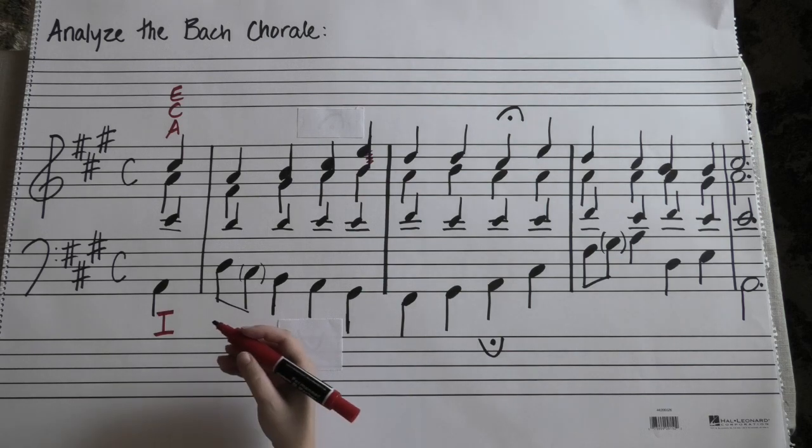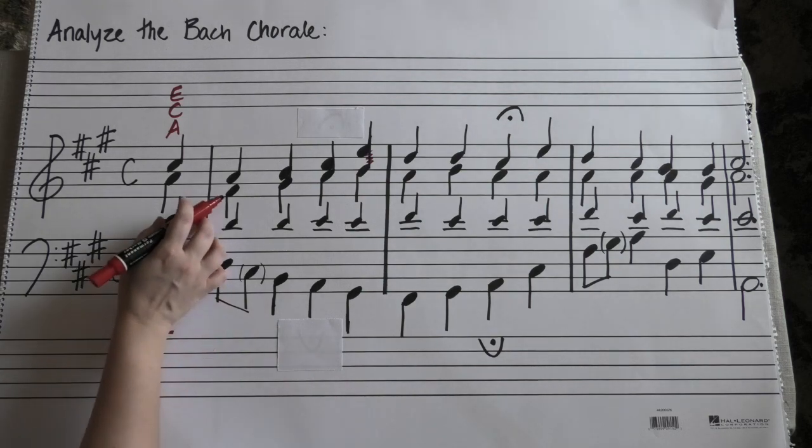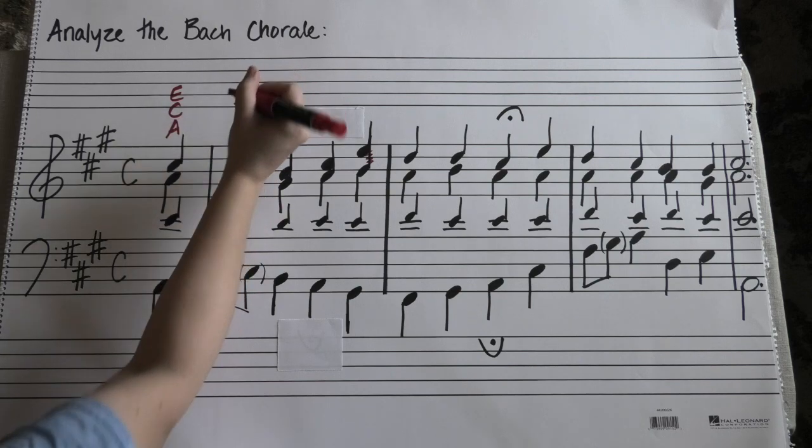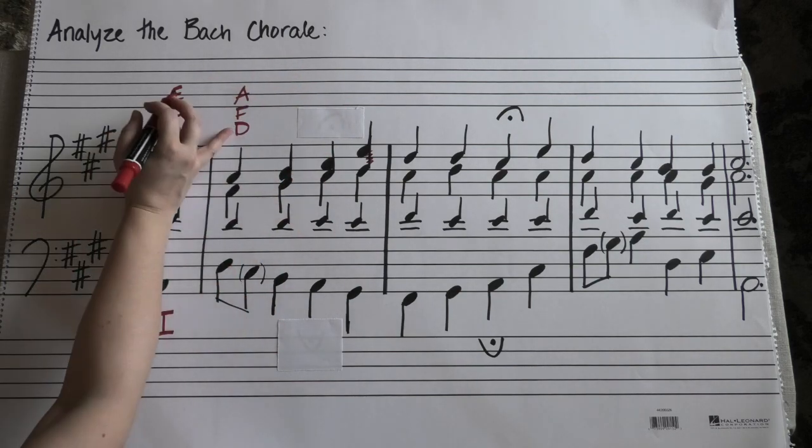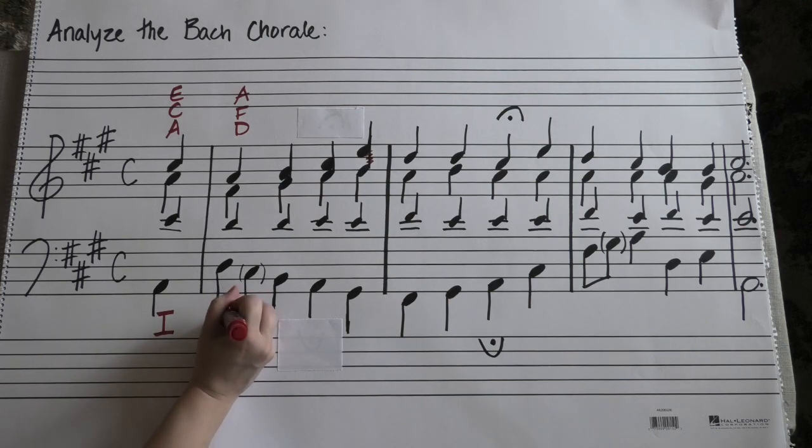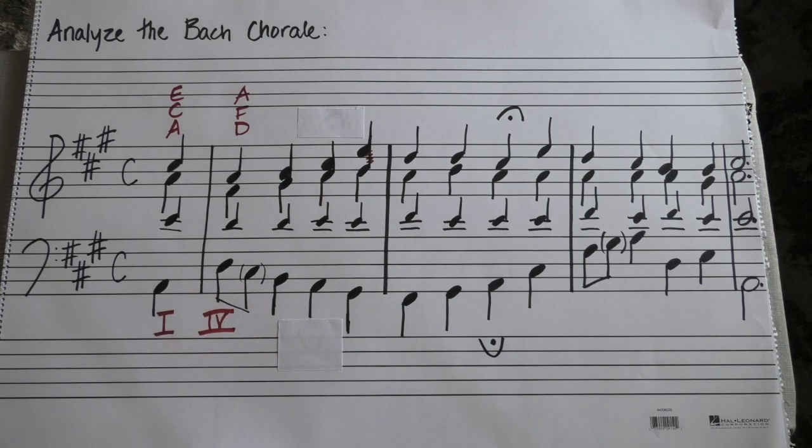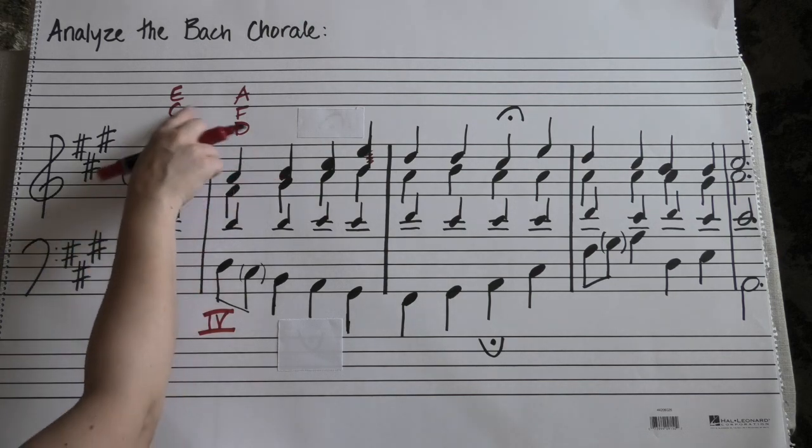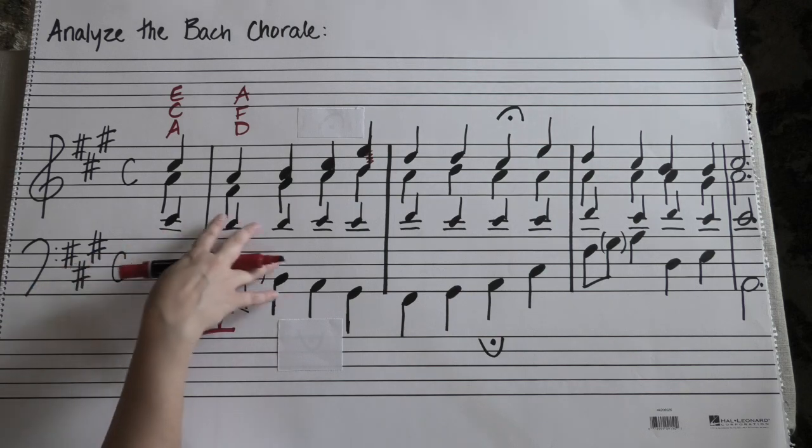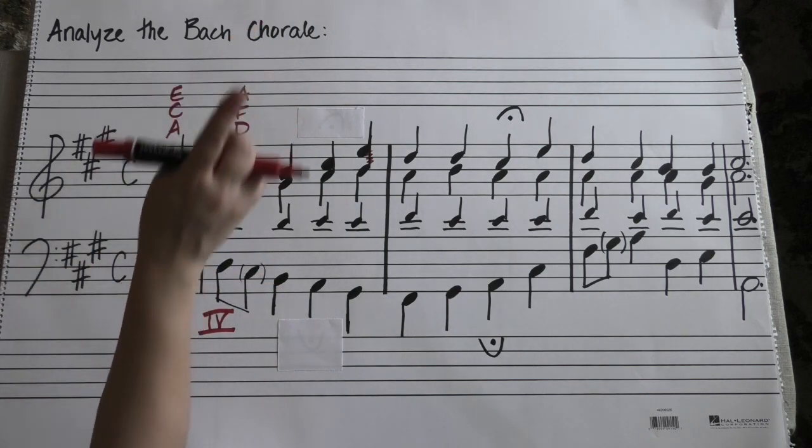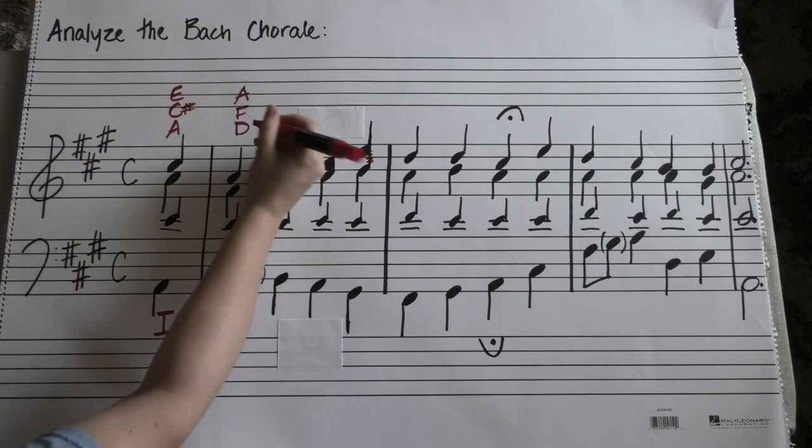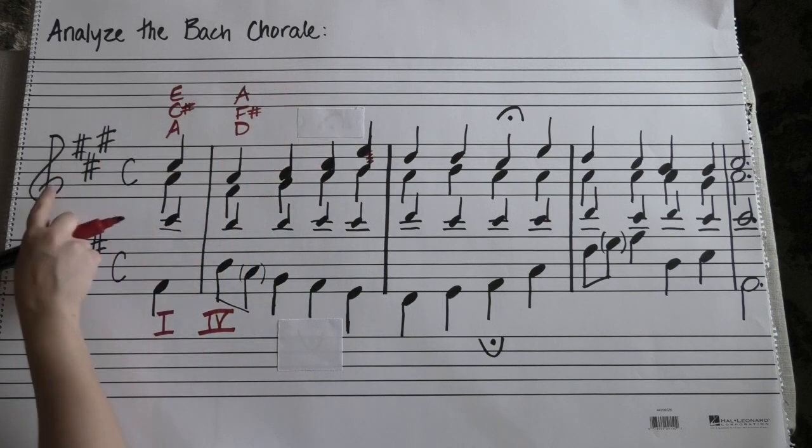Okay, on the next one, we have D, D, F sharp, A. If you look that up in your key signature, you know that D is the root. And you know that that is going to be a four chord. Okay, and again, you can go back, you can do all of this as long as there's no accidentals in here. These fit in the key signature. So you can just look at the letters and be good to go. But if you feel more comfortable, absolutely add those because they do exist in the key signature.